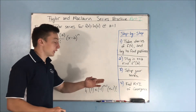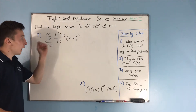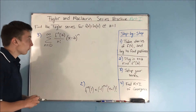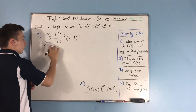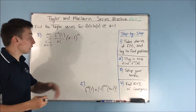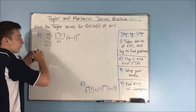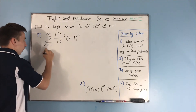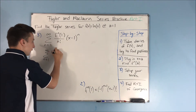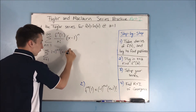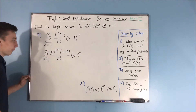On to step 3 — let's set up our series. The formula for a Taylor series is the sum from n equals 0 to infinity of the nth derivative of f at a over n factorial times x minus a to the nth power. We know a equals 1 here, and we're starting from n equals 1 because natural log of x didn't fit our pattern — and it was also 0 when we plugged in 1. So our nth derivative of f at 1 is negative 1 to the n minus 1 times n minus 1 factorial, over n factorial, times x minus 1 to the n.